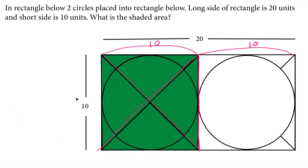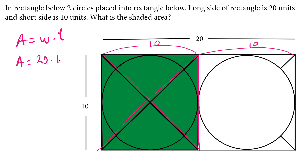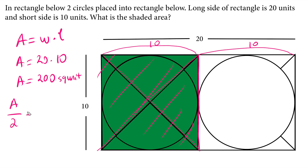Yes, all green parts fit into one square area. Obviously the green shaded area is half of the area of the rectangle. The area of the rectangle is width times length: 20 times 10, which is 200 square units. So half of this area — 200 divided by 2 — gives us 100 square units.